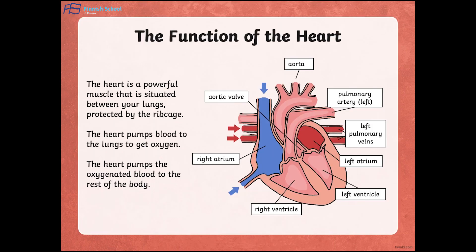Now we will explain the function and the structure of the heart. The heart is a powerful muscle that is located between our lungs and it is protected by the ribcage. The heart pumps the blood to the lungs to get oxygen, and once it gets the oxygen, the heart pumps the oxygenated blood to the rest of the body.